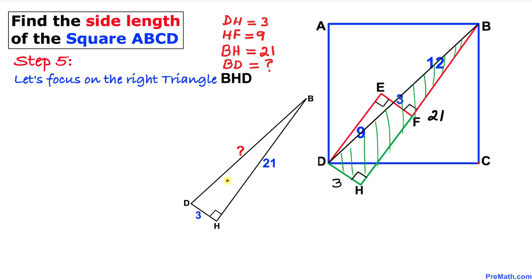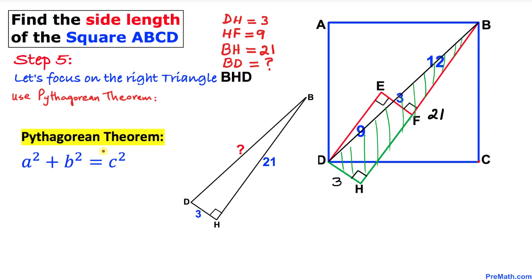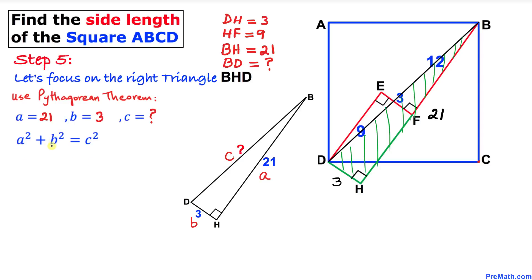Since triangle BHD is a right triangle, we use the Pythagorean theorem: A² + B² = C². Let side BH be A = 21, side DH be B = 3, and the hypotenuse be C. So: 21² + 3² = C², which gives 441 + 9 = C², so C² = 450.